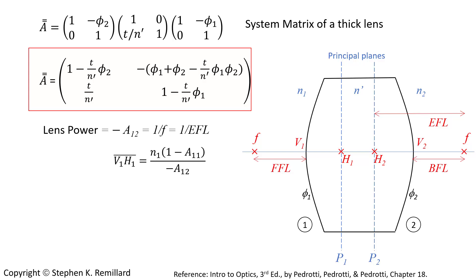The separation between the back principal plane and the back vertex is given by this combination. So we get both of these distances. The principal planes are located using the system matrix.